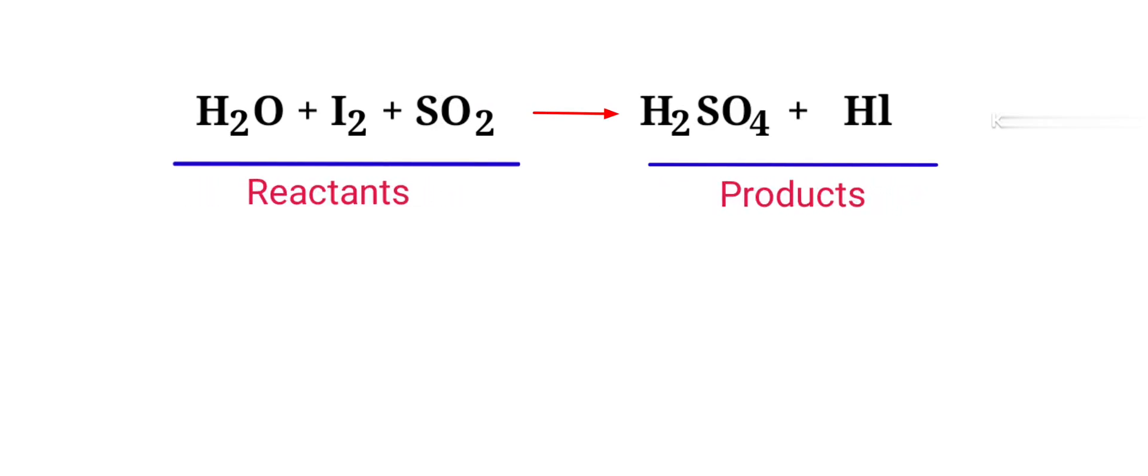In this equation, the reactants are water, iodine and sulfur dioxide, and the products are sulfuric acid and hydrogen iodide.